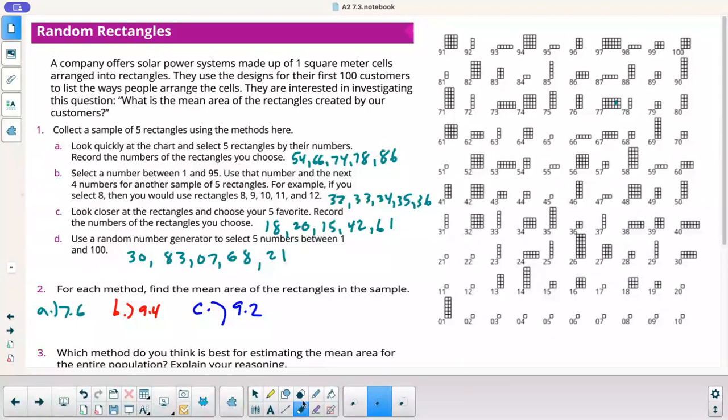30, that would be 10. 83 is 6. 7 is 1. 68 is 3. 21 is 2. So I got 22 divided by 5 is 4.4. So total wide range there. Here we got 9.4, 4.4.